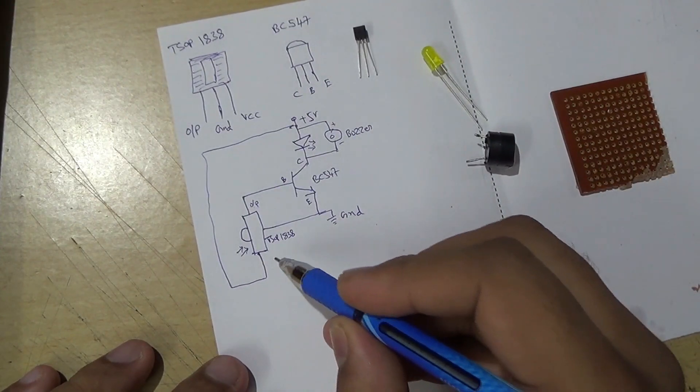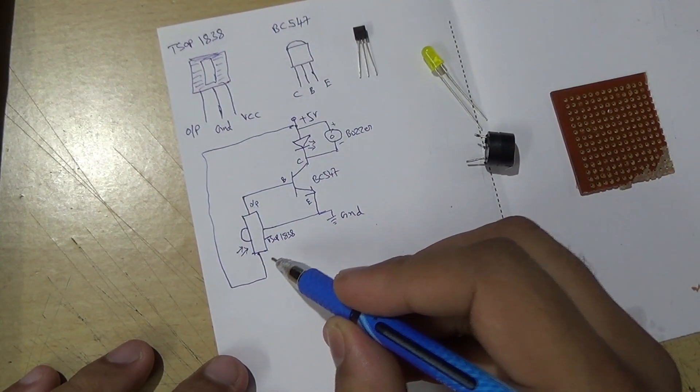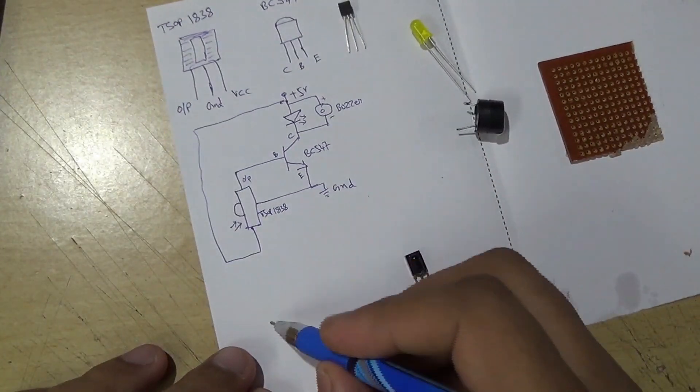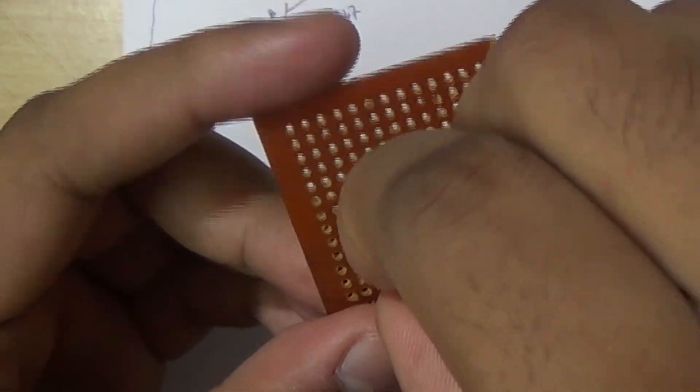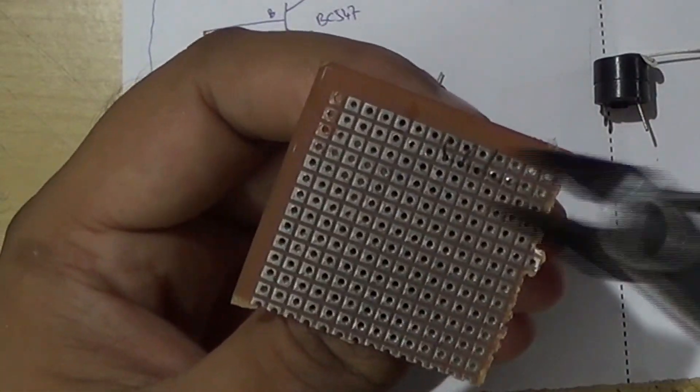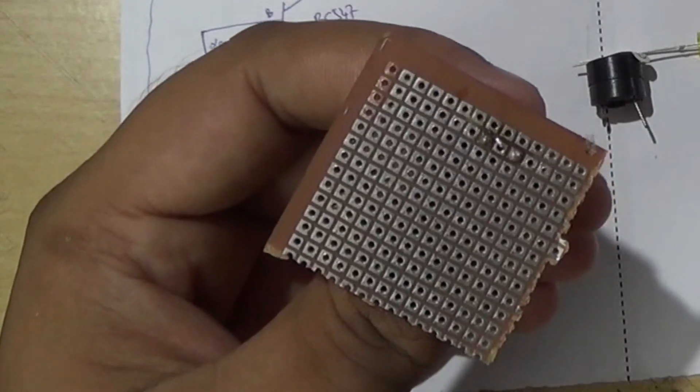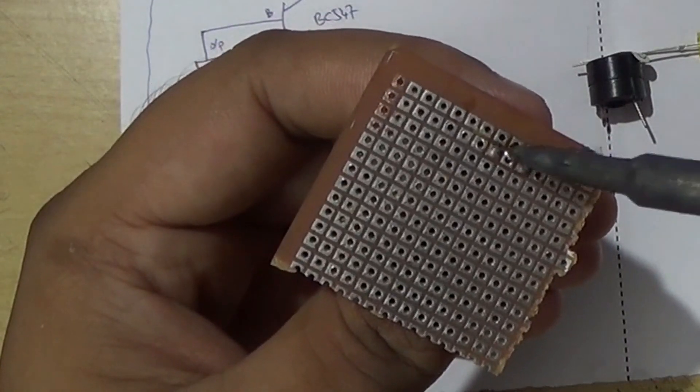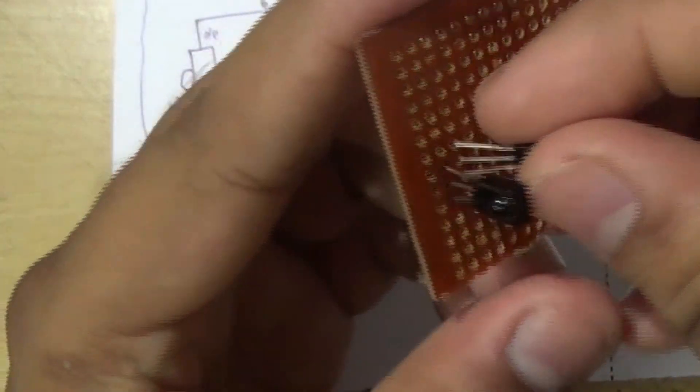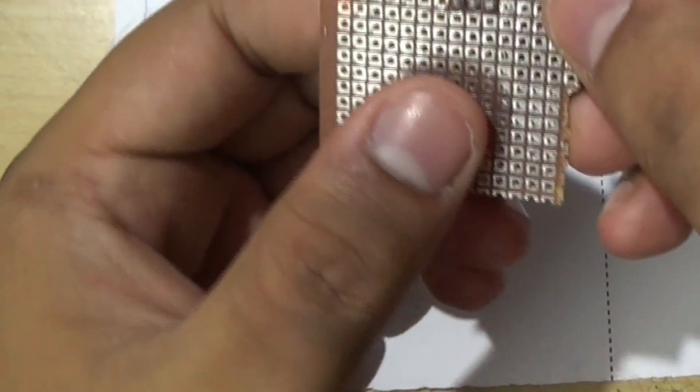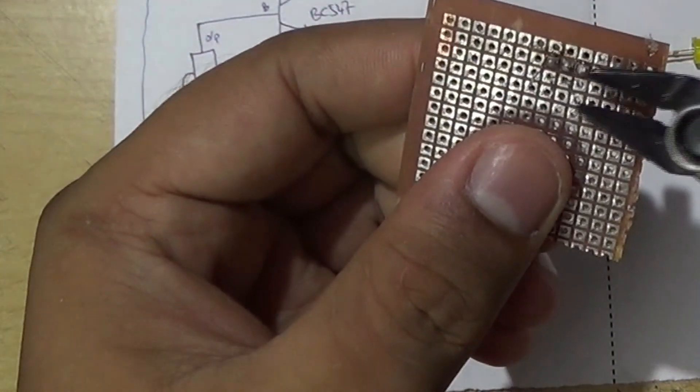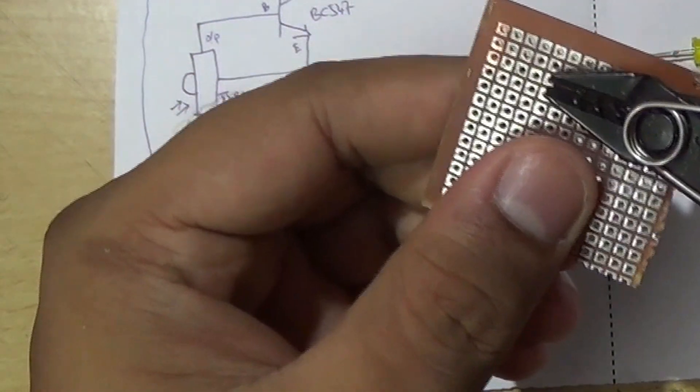When somebody obstructs the IR rays, the output goes high, the buzzer gives an alarm.